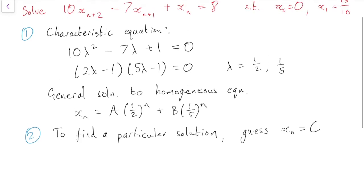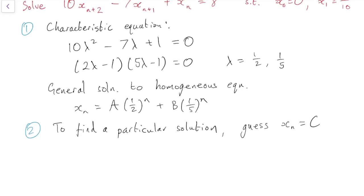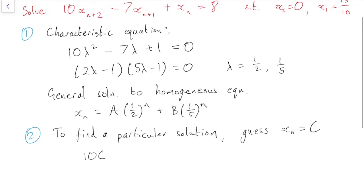So if that were a solution, then 10C - 7C + C would equal to 8. So if there were a constant solution to the homogeneous equation, it would solve this. Now what do we get? On the right-hand side we get 4 lots of C. On the right-hand side we get 8. Oh, so it does have a solution of C = 2.